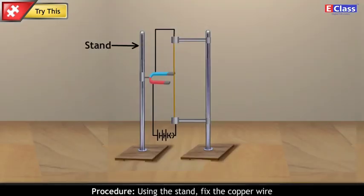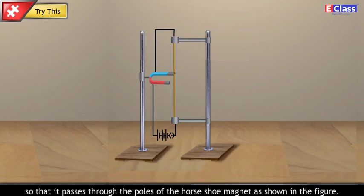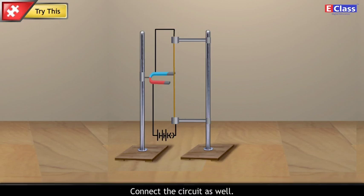Procedure: Using the stand, fix the copper wire so that it passes through the poles of the horseshoe magnet as shown in the figure. Connect the circuit as well.